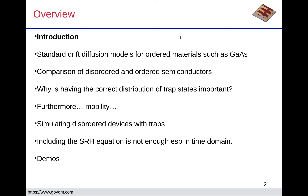I want to make an introduction about why I'm writing these slides. I then want to talk about standard drift-diffusion models used for things like gallium arsenide and ordered materials. I then want to compare physically disordered materials like plastic electronics to very ordered materials like gallium arsenide, and then discuss why for disordered materials this distribution of trap states is important to reproduce things like mobility and recombination correctly, followed by some demos.